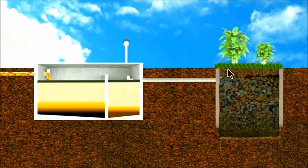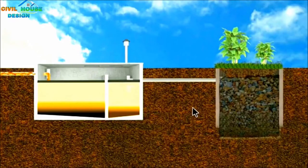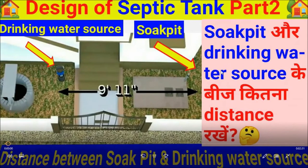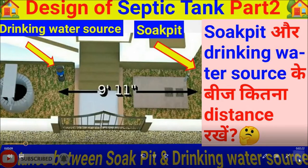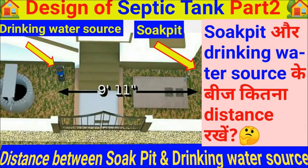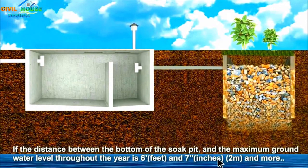In this video we will talk about the distance between the soak pit and the drinking water source, and the size of the septic tank. The distance between the soak pit and the drinking water source depends on the relationship between the soak pit and the ground water table.